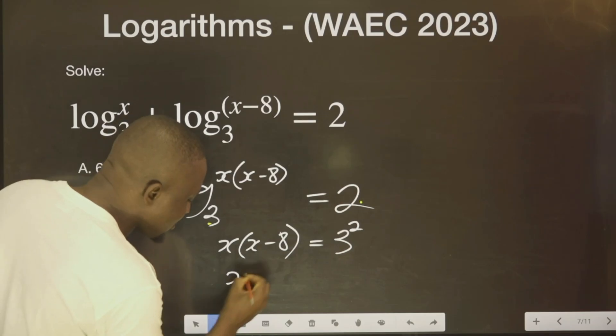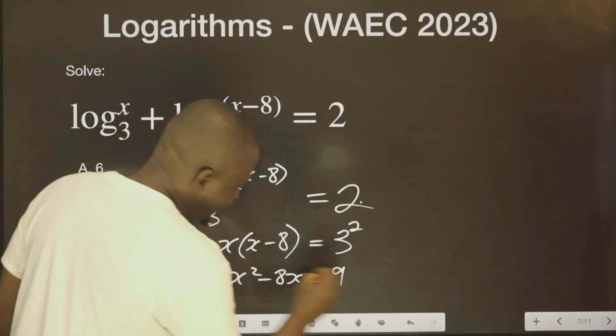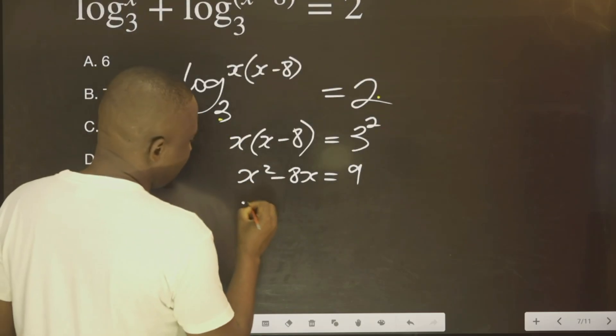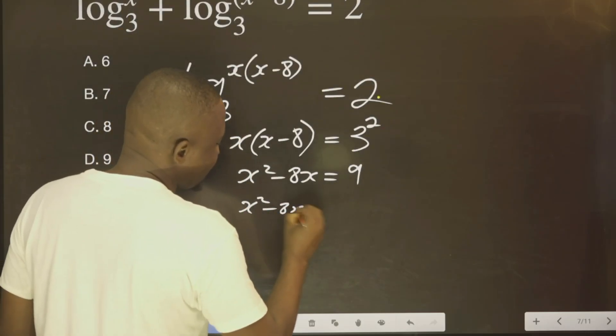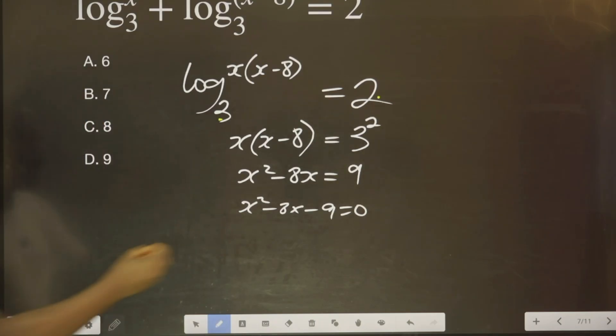So this is x raised to the power 2 minus 8x equals to 9. You agree with me? This is x² minus 8x minus 9 equal to 0. Now, this becomes what? A quadratic equation.